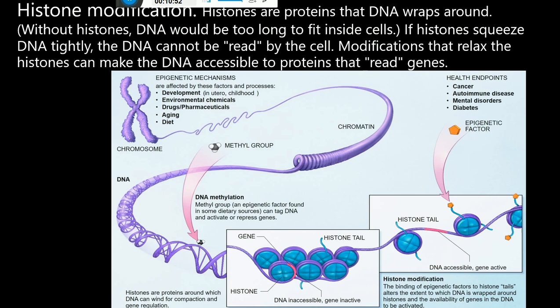Finally, the endpoints of epigenetics include diseases such as cancer, mental disorders, and diabetes, resulting from both DNA methylation and histone modifications. In summary: DNA methylation involves the addition of a methyl group to DNA, which can activate or repress genes; histone modification involves epigenetic factors binding to histone tails, affecting how tightly DNA wraps around histones and the availability of genes to be activated. Thank you very much for your attention.